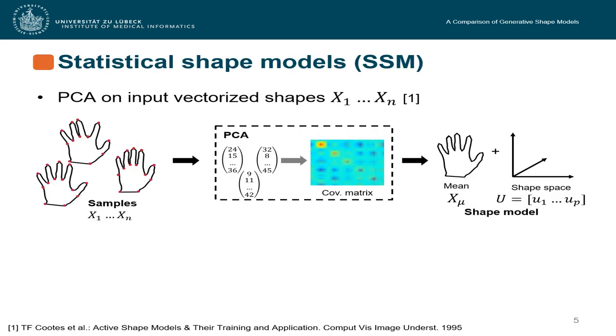The first statistical shape model I'm going to present is the conventional one. Here we have a training dataset, typically some point-based representation of shapes. We vectorize those and thanks to PCA we end up having a mean shape and a shape space, which is built from the eigenvectors corresponding to the first few eigenvalues.